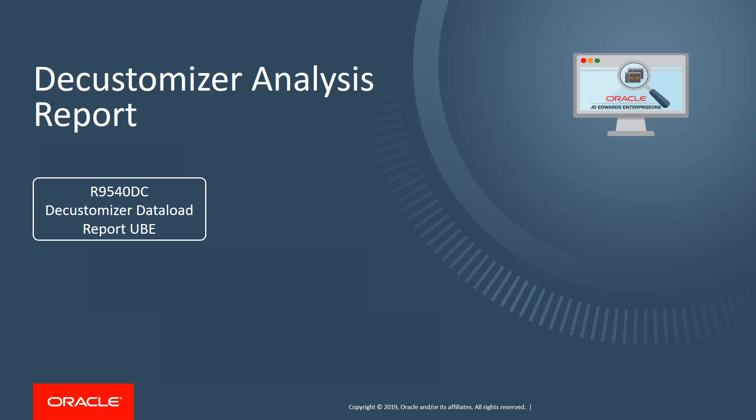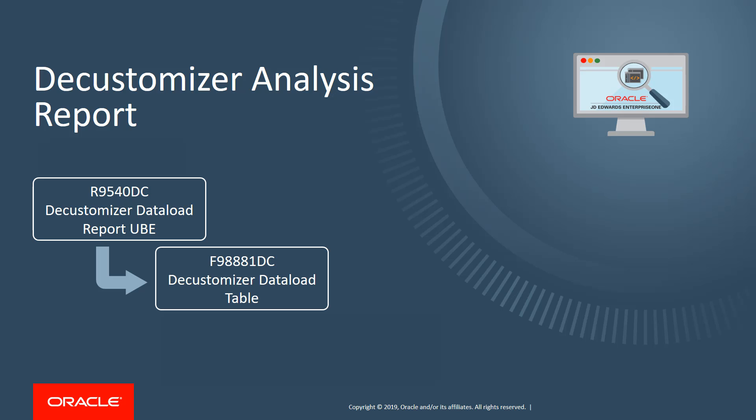The Decustomizer Data Load UBE R9540DC loads the Decustomizer Data Load Table F98881DC with a list of all the customized application Enterprise One objects.